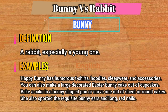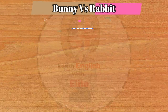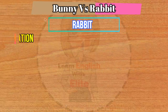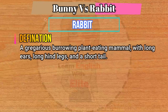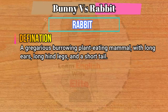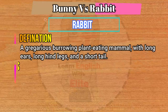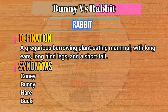Now let me define the second word: rabbit. The definition of rabbit is: a gregarious burrowing plant-eating mammal with long ears, long hind legs, and a short tail.